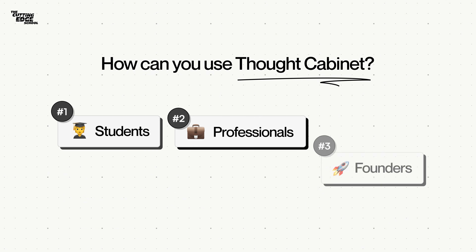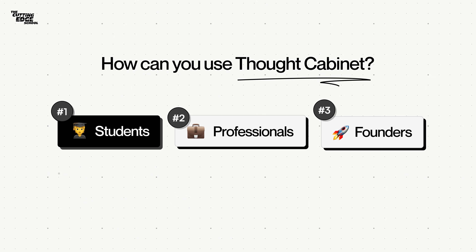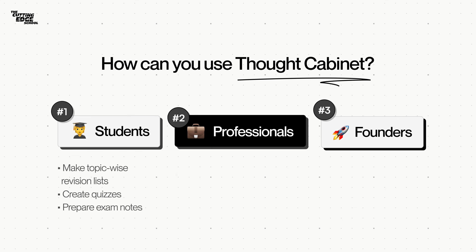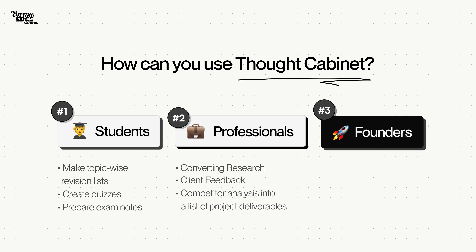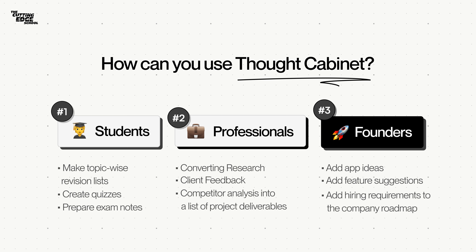Students can use a thought cabinet for converting their lecture notes into topic-wise revision lists, quizzes, or exam notes. Business professionals can use this feature for converting all of their research, interview feedback, client feedback, or competitor analysis into a list of project deliverables. Founders can paste app ideas, feature suggestions, and hiring requirements into a proper company roadmap.